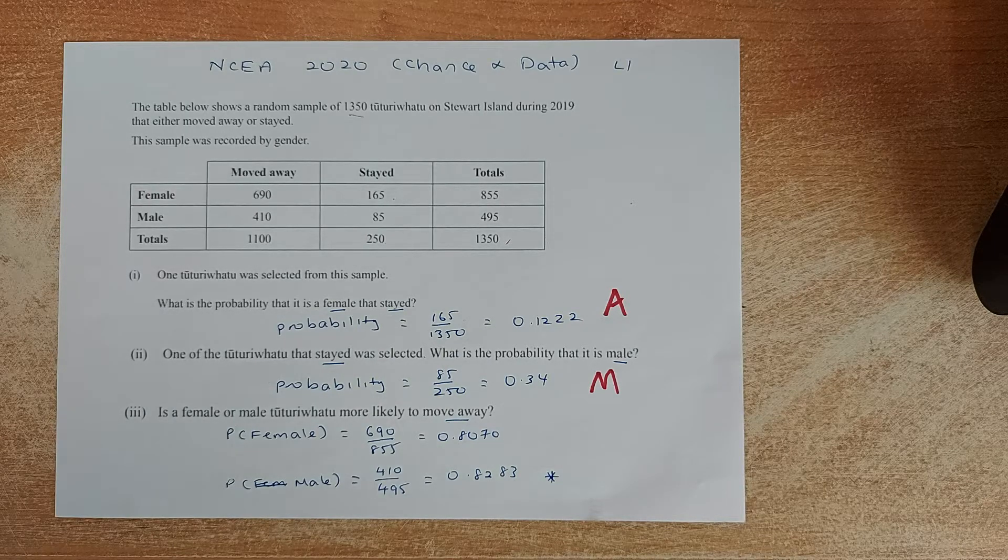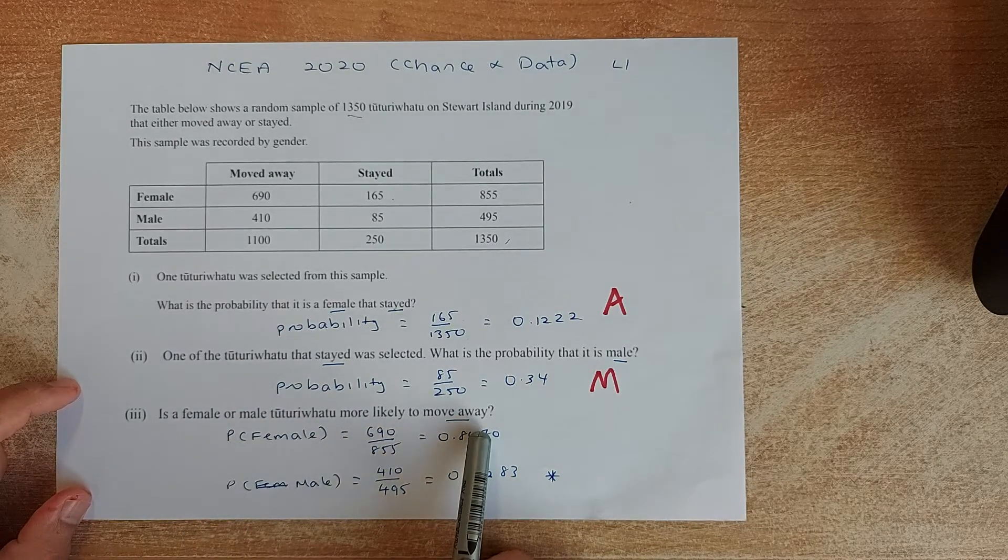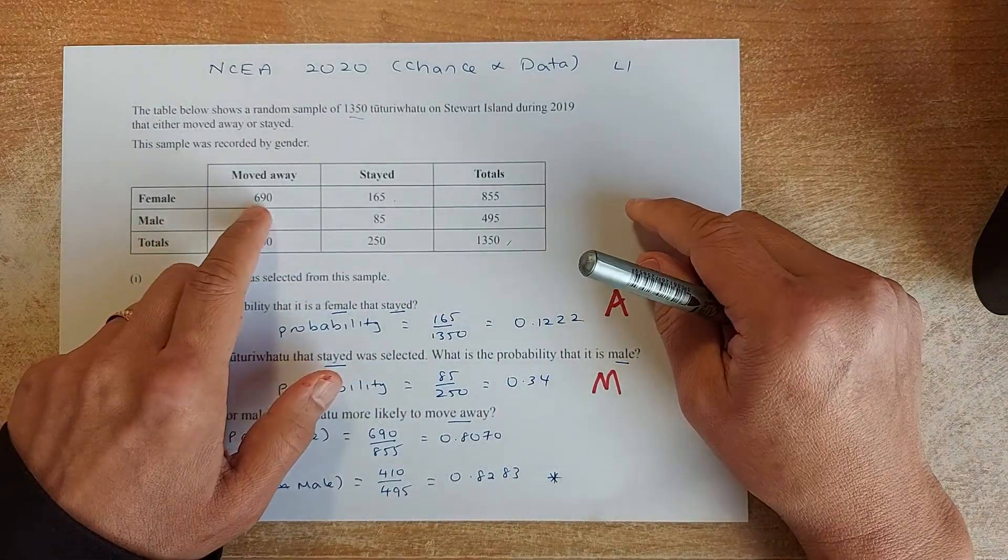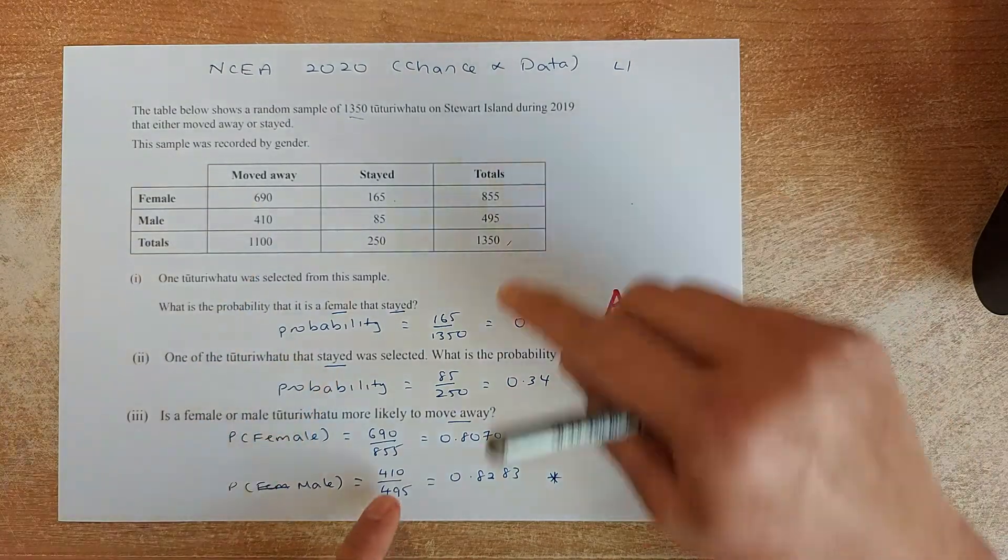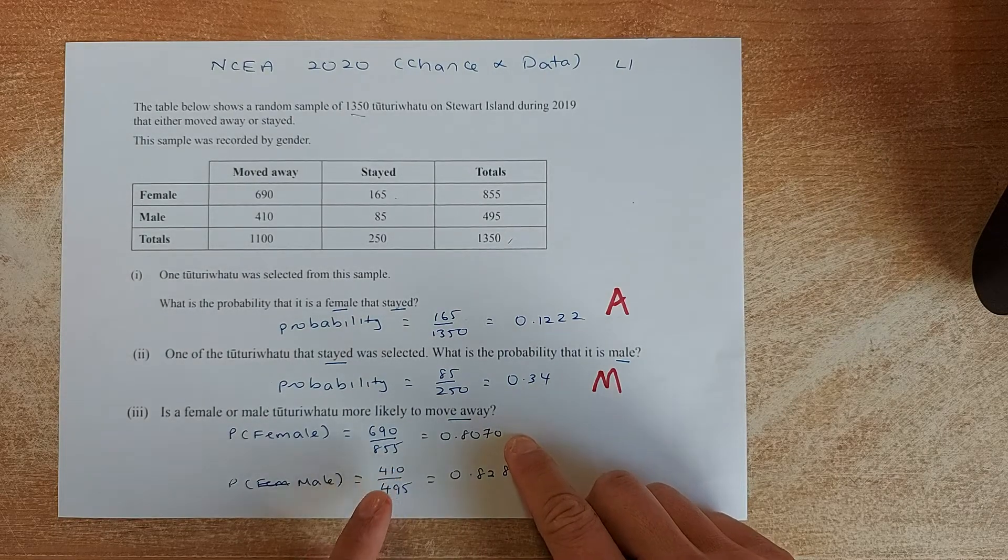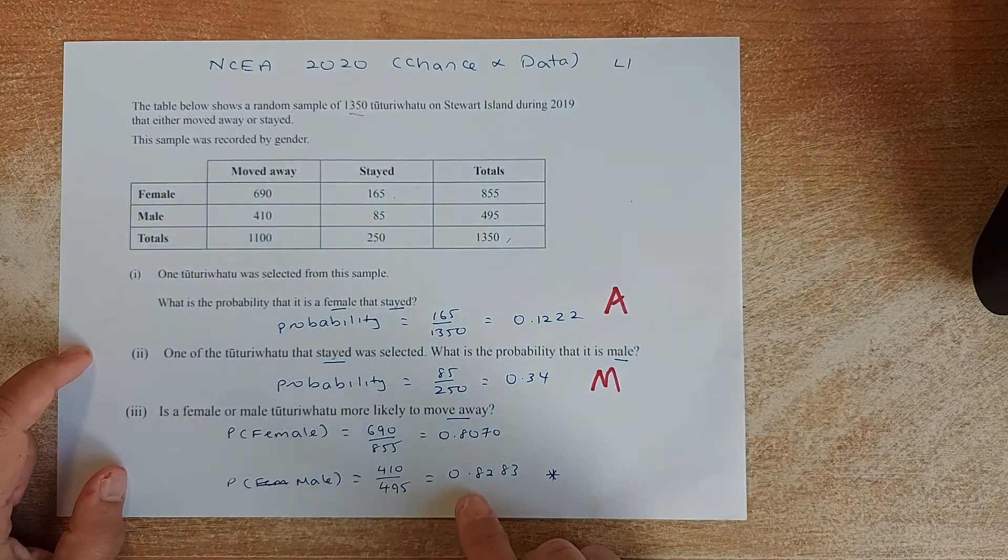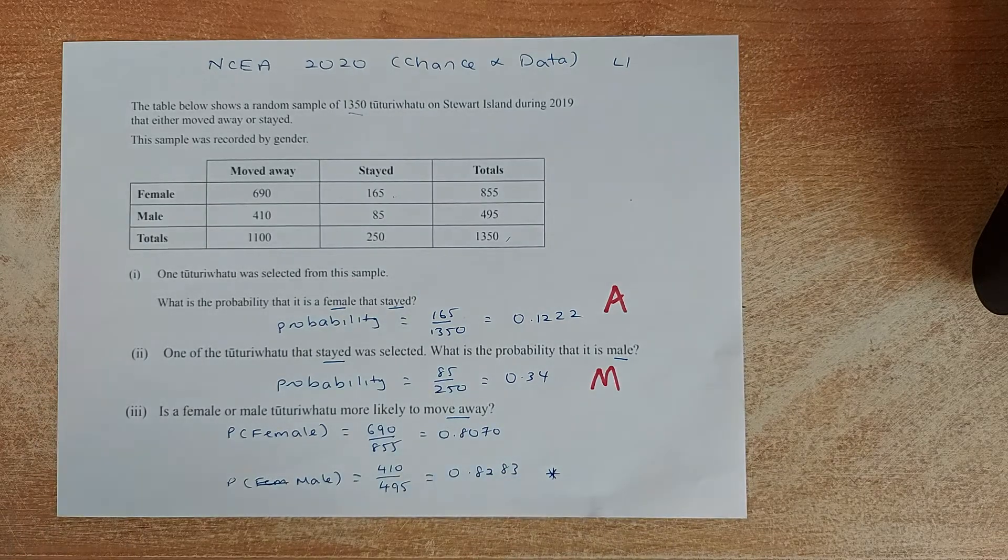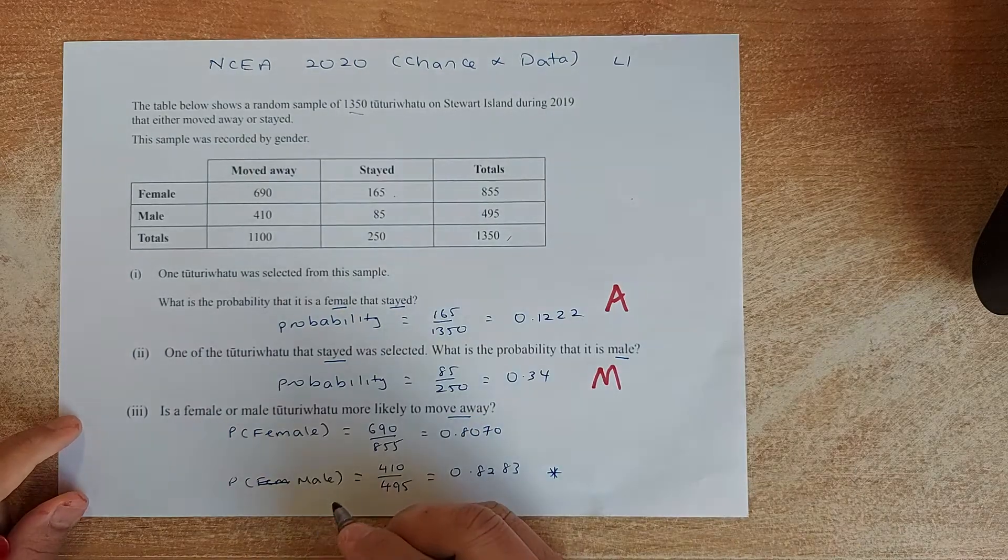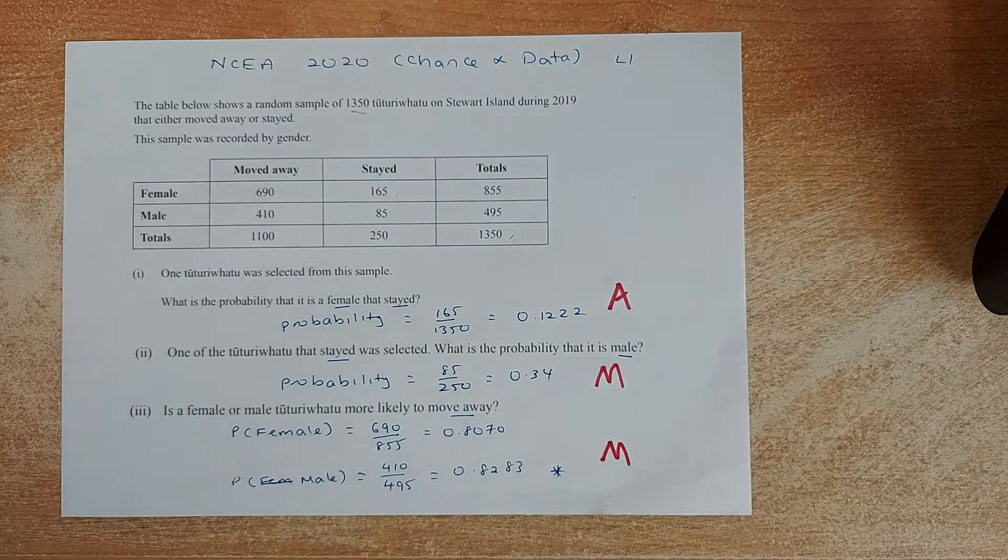And last but not least, we look at the last question for NCEA level 1. Is it a male or female that is more likely to move away? So move away, so we are going to look at female who move away. It's going to be 690 that move away out of a total of 855 birds, and that gives you 0.8070. And for the male, it's going to be 410 out of the total male is 495, and the answer is 0.8283. And you need to answer the question, which is more likely to move away? So your answer is going to be male is more likely to move away. If you can answer that, that is a merit in NCEA level 1 chance and data.